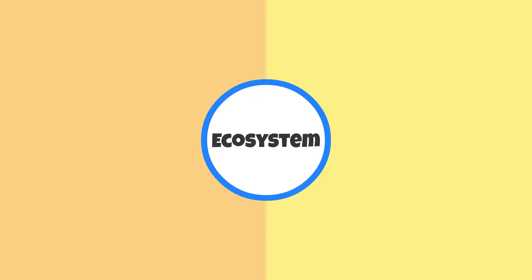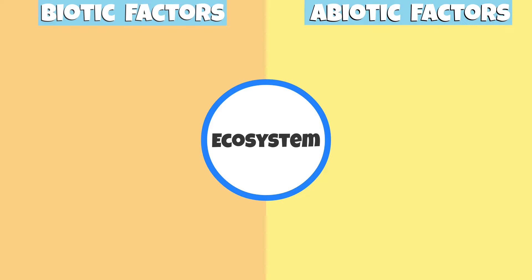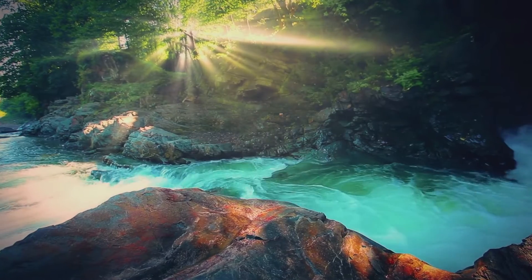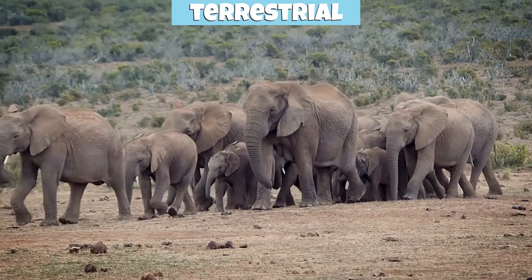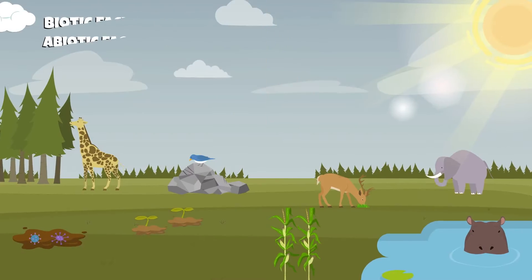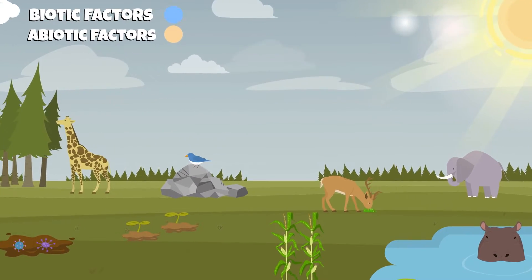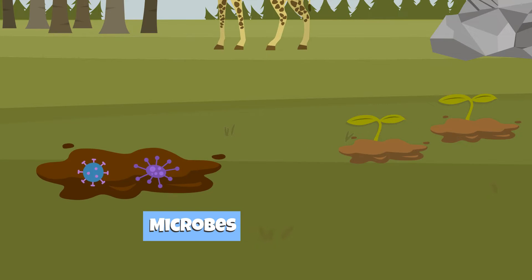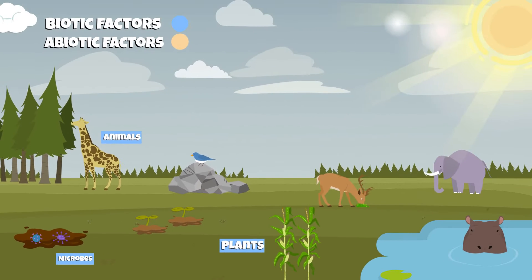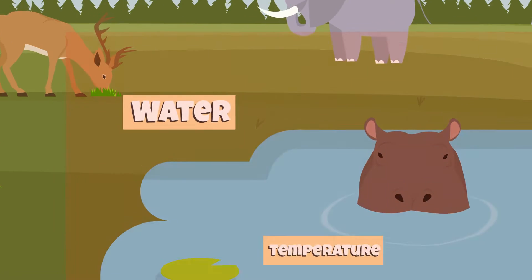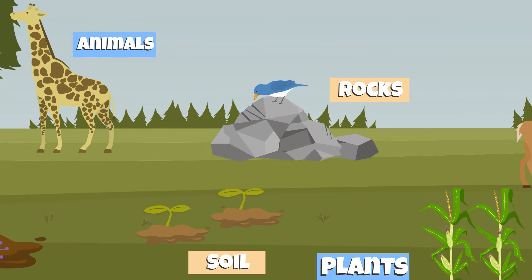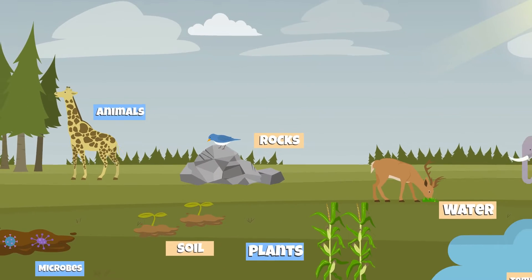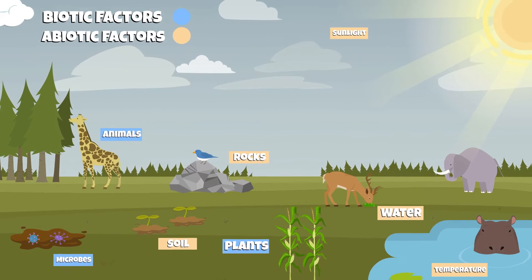In an ecosystem, you will find both biotic and abiotic factors that interact with each other. This might take place in fresh water, marine, or a terrestrial ecosystem. Biotic factors are living things, such as plants, animals, and microbes. Abiotic factors are non-living things, such as sunlight, water, temperature, rocks, and soil. Both biotic and abiotic factors are important for the survival and growth of organisms and populations.